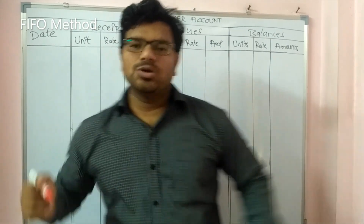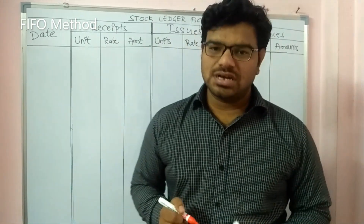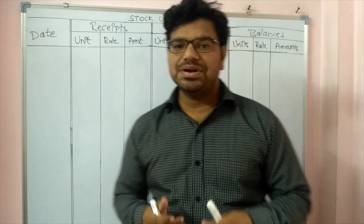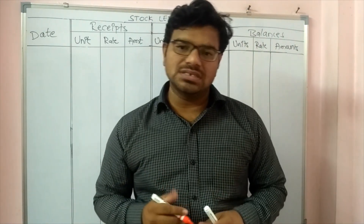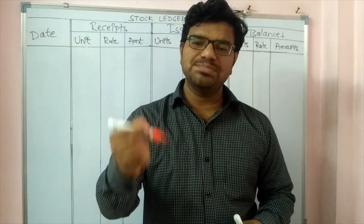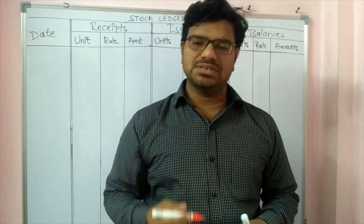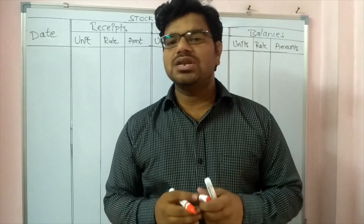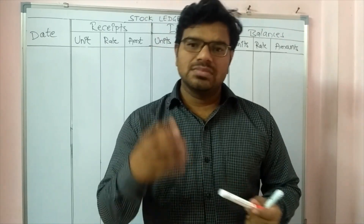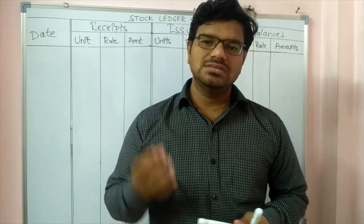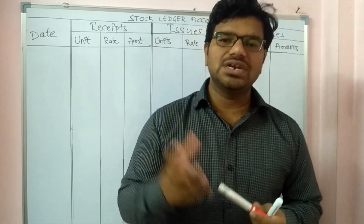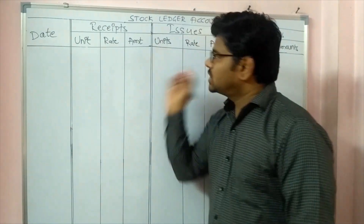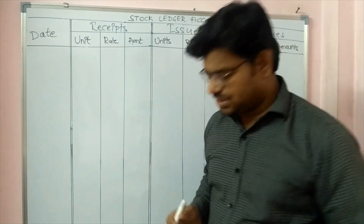Let us understand what is a stock ledger account and how it works. This stock ledger account can be prepared in various methods like FIFO, LIFO, simple average method, weighted average method, and so on. Very commonly used are only three: FIFO method, LIFO method, and weighted average method. So let us first understand the stock ledger account in the FIFO method.